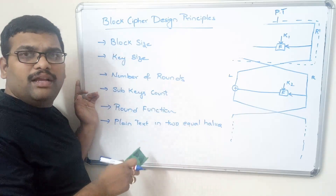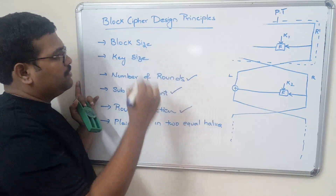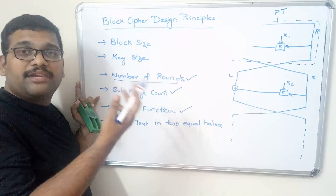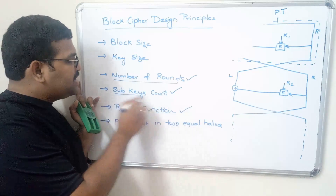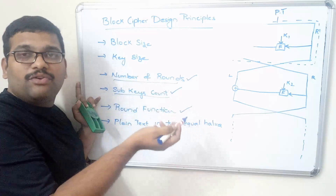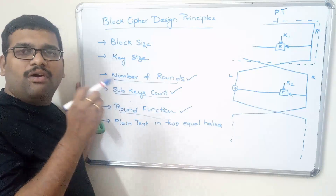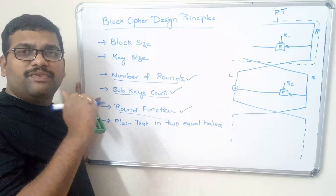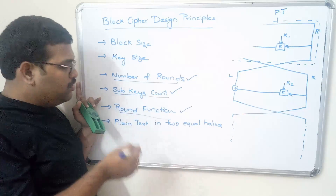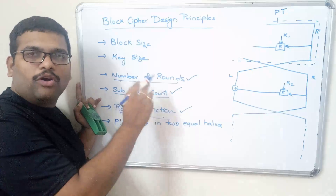The security depends on the number of rounds, sub-keys, and the round function. If the number of rounds is increased, the complexity will be increased and the security will also be increased — the data will be more secure. If the number of rounds is increased, automatically the number of sub-keys will also increase, so the security increases. If the round function is more complex, analysis of that algorithm will be very strong, making it very difficult for a cryptanalyst to attack the data or break the algorithm.